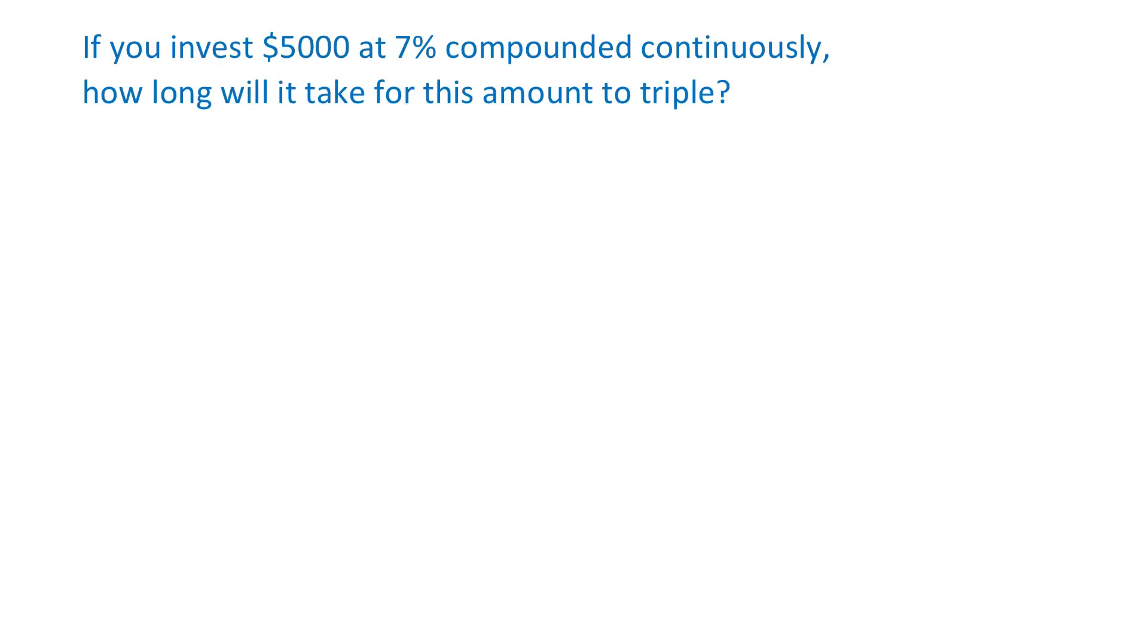If you invest $5,000 at 7% compounded continuously, how long will it take for this amount to triple?